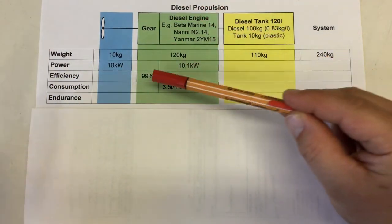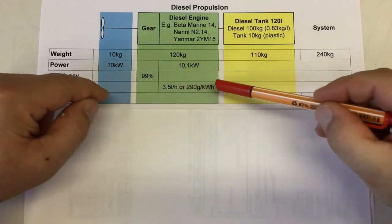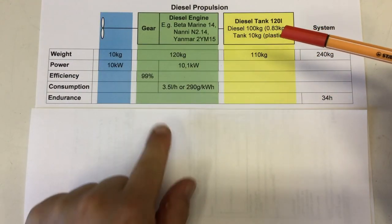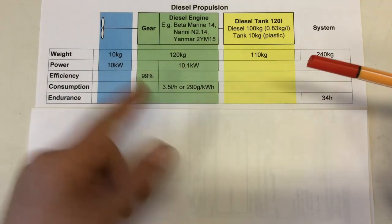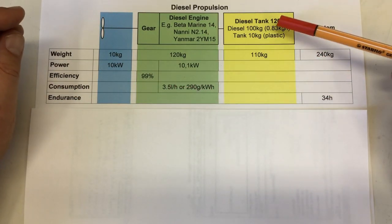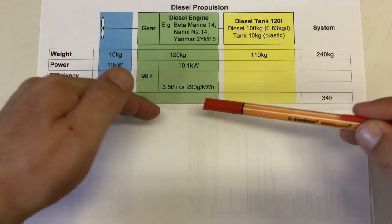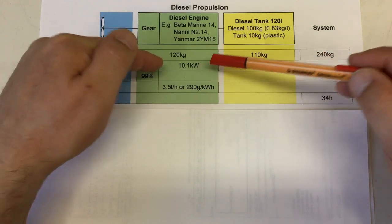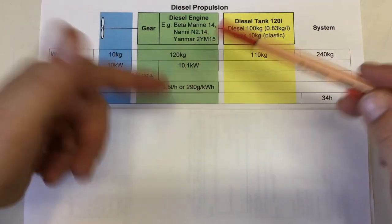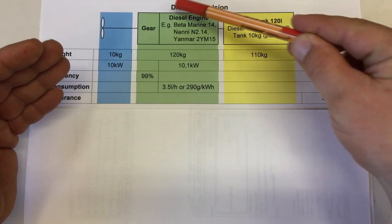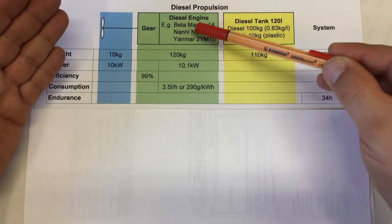At full ahead, such an engine would burn 3.5 liters per hour or 290 grams per kilowatt hour. That number is quite easy to calculate from the consumption in liters per hour. You take the 3.5 liters per hour, multiply that by the density of diesel, 0.83 kilograms per liter, and divide that by the power for one hour, 10.1 kilowatt hours. To get to these numbers, I took the average across three popular small marine engines, the Betamarine 14, the Nanni N2.14, and the Yanmar 2YM15.